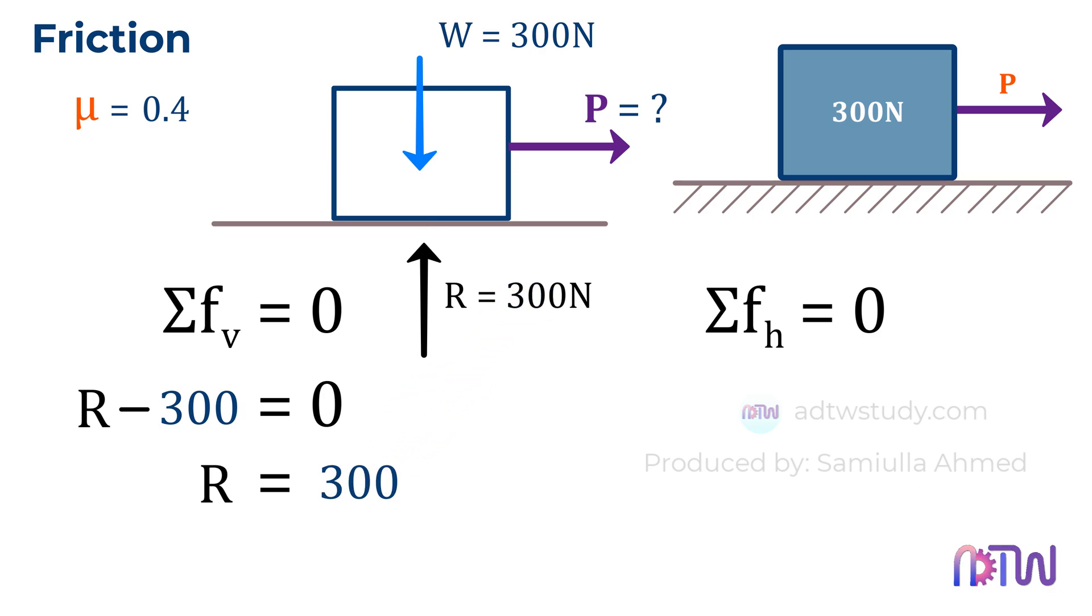With this, we have obtained the normal reaction force. Now, we need to sum up the horizontal forces. If we look closely, there are two forces acting horizontally. One is the force P which is acting to the right, and the other is the frictional force which is acting opposite to the force P.